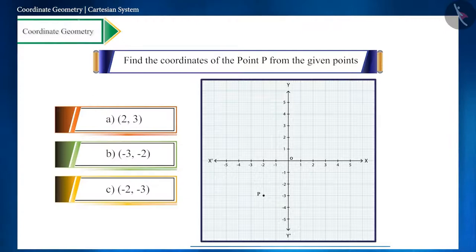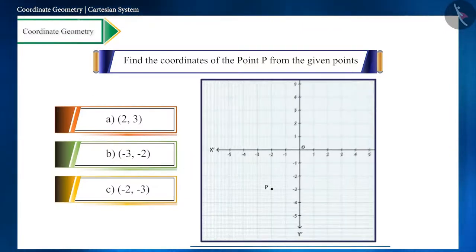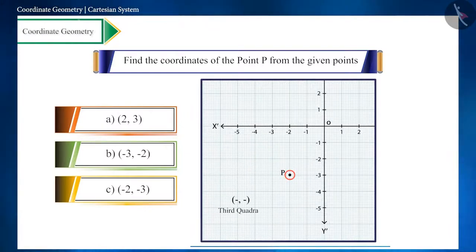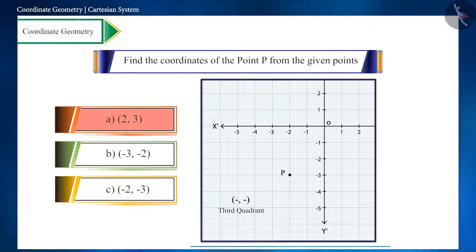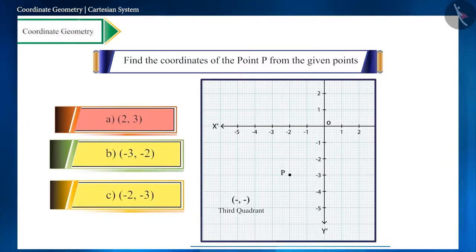Friends, which of the given points is the coordinate of the point P? Point P is in the third quadrant. That is, the first option will not be the correct answer. Now the remaining two options, these two options are the coordinates of the third quadrant.